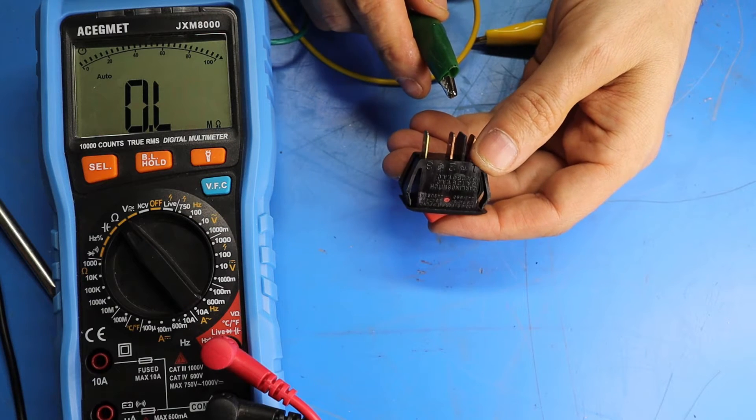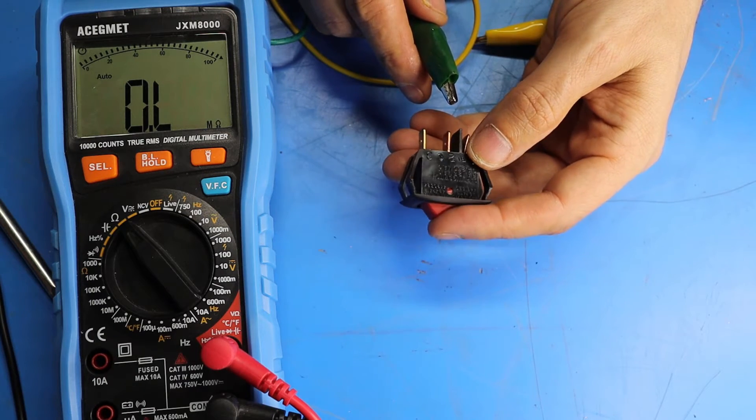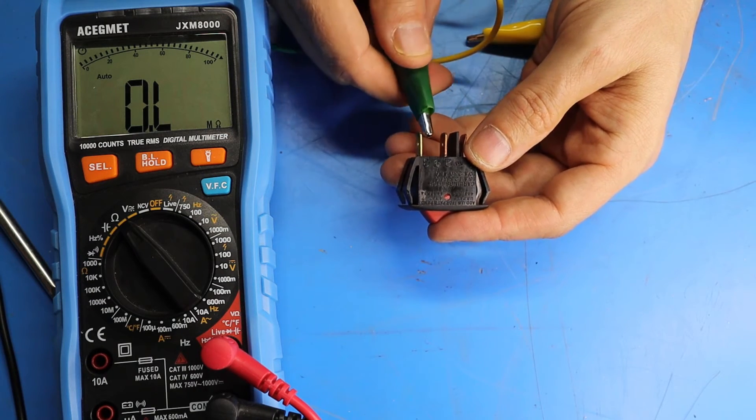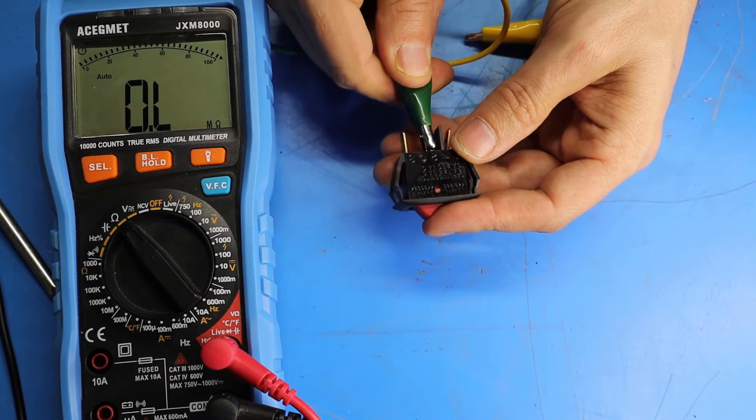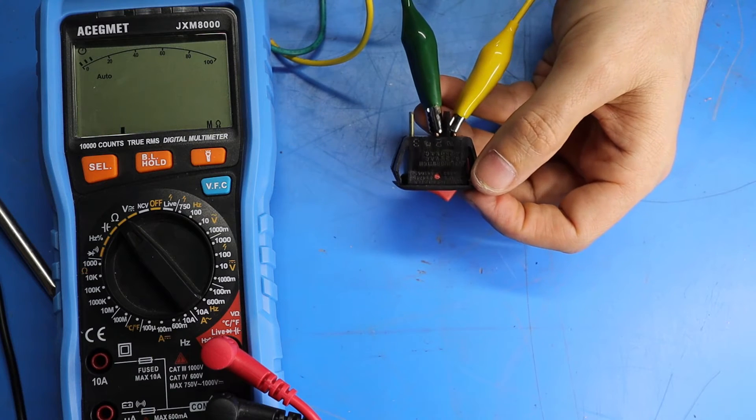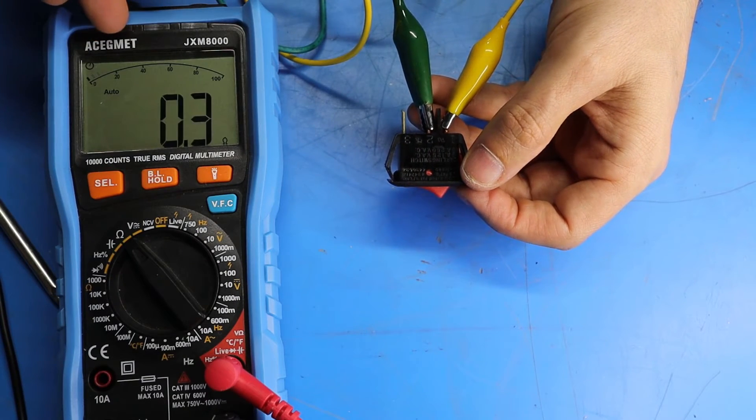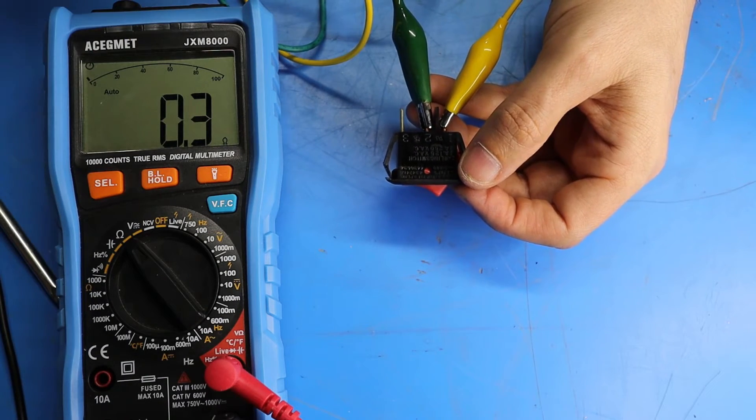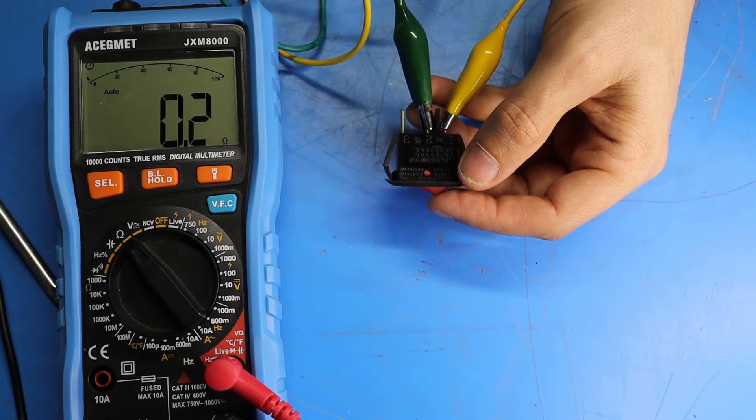Now let's take a look at another almost identical switch that I happen to have here, that I pulled out of a functioning Astron power supply. In the off position we have open, and if I toggle the switch on you can see we go down to 0.3 ohms, which is what we would expect.